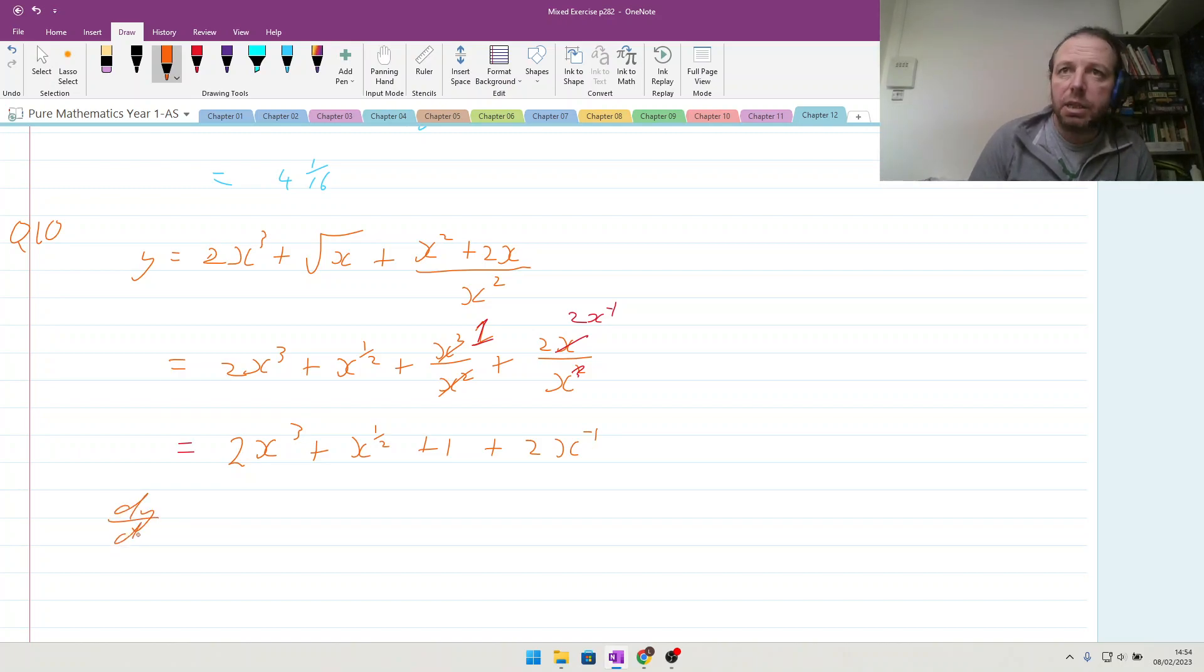So dy by dx of this, multiply by the power, 2 times 3 is 6x, drop the power by 1, squared, plus a half multiply by the whole power x to the power of minus a half because a half take away 1, plus 1 just disappears, plus change this to a minus 2 because minus 1 times 2 is minus 2, x to the minus 2.